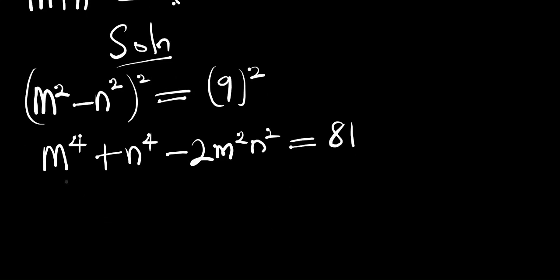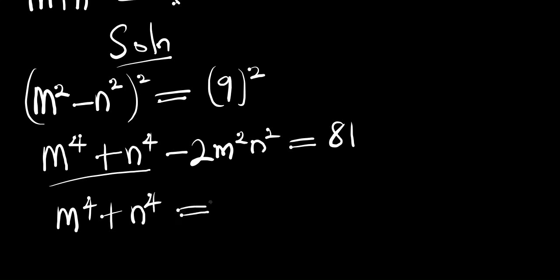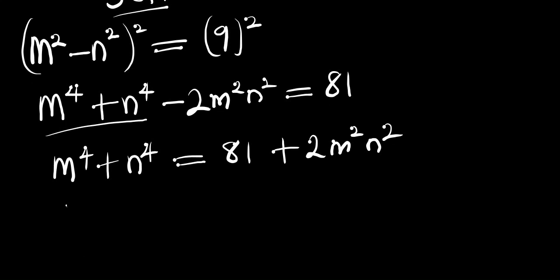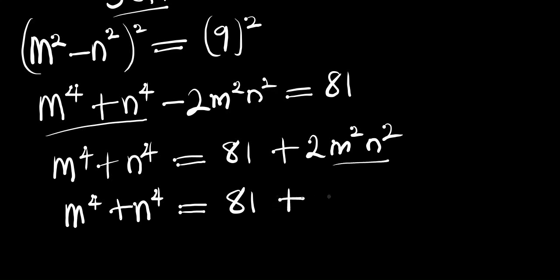We can make m⁴ plus n⁴ the subject, giving us m⁴ plus n⁴ equals 81 plus 2m²n², which we can factor as 81 plus 2 times (mn)².